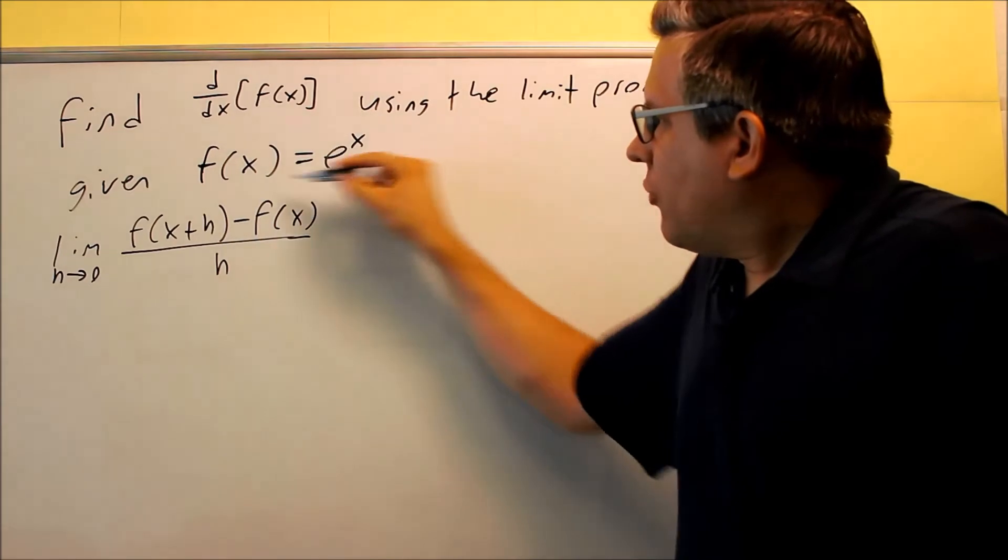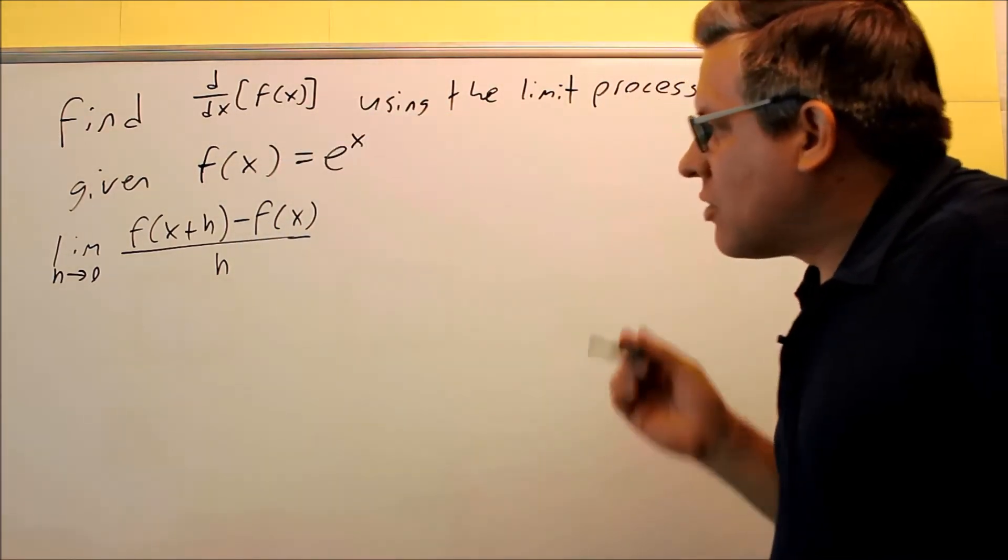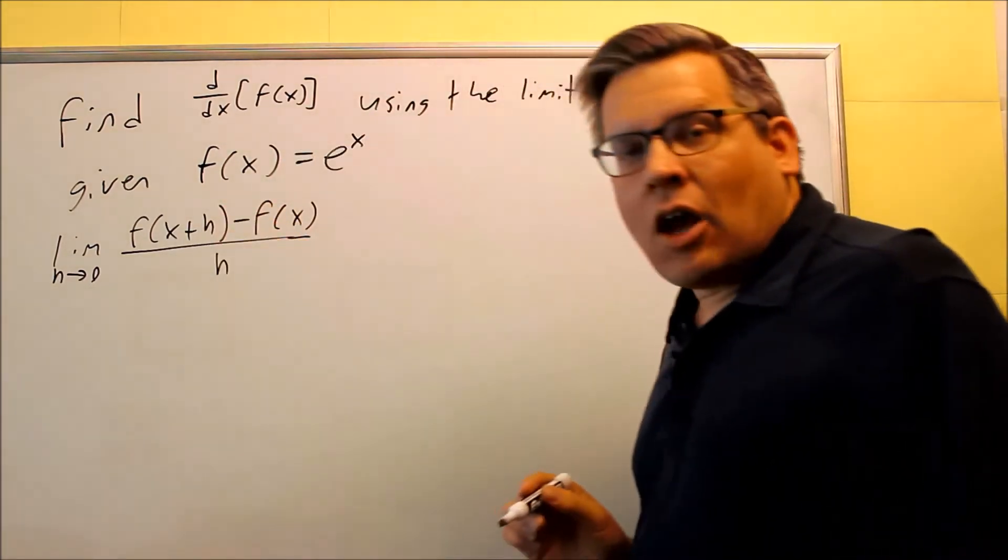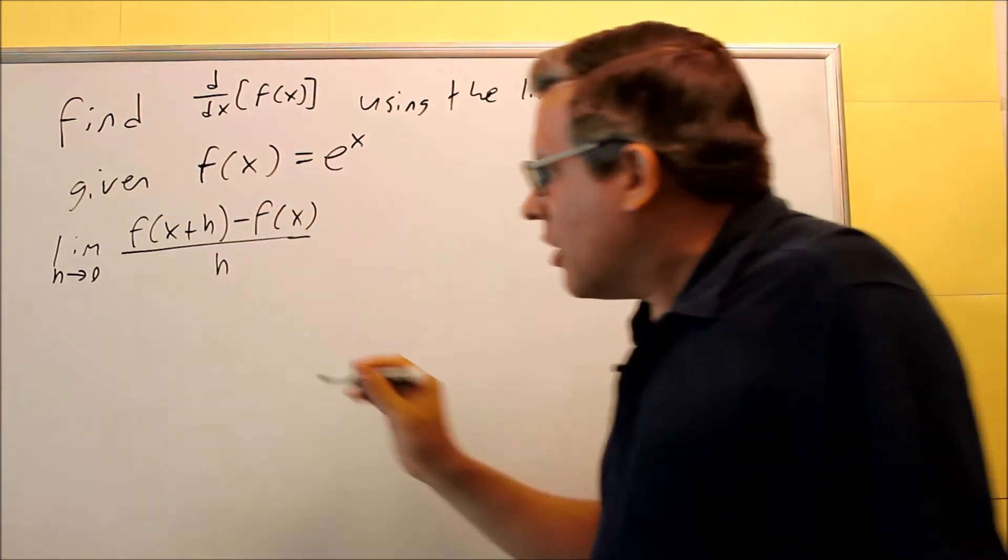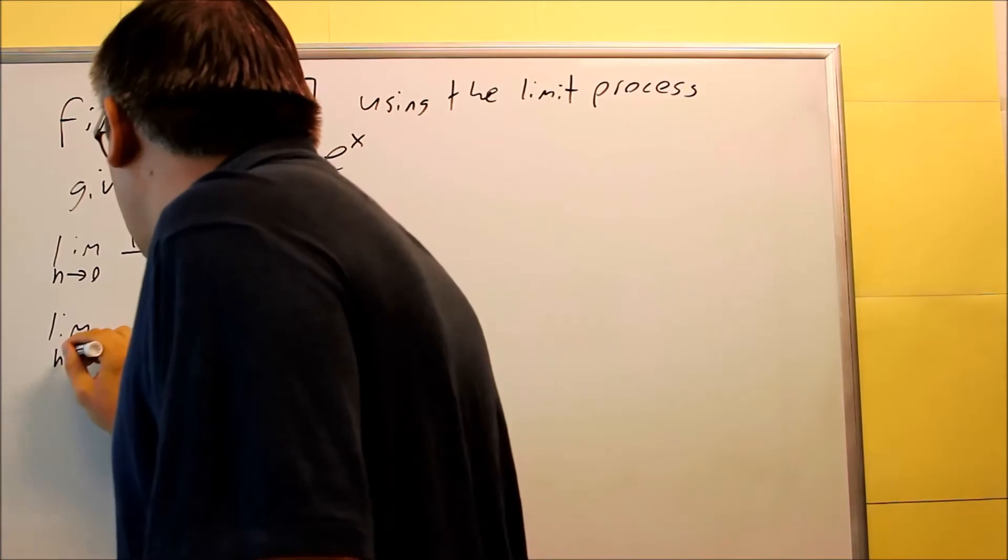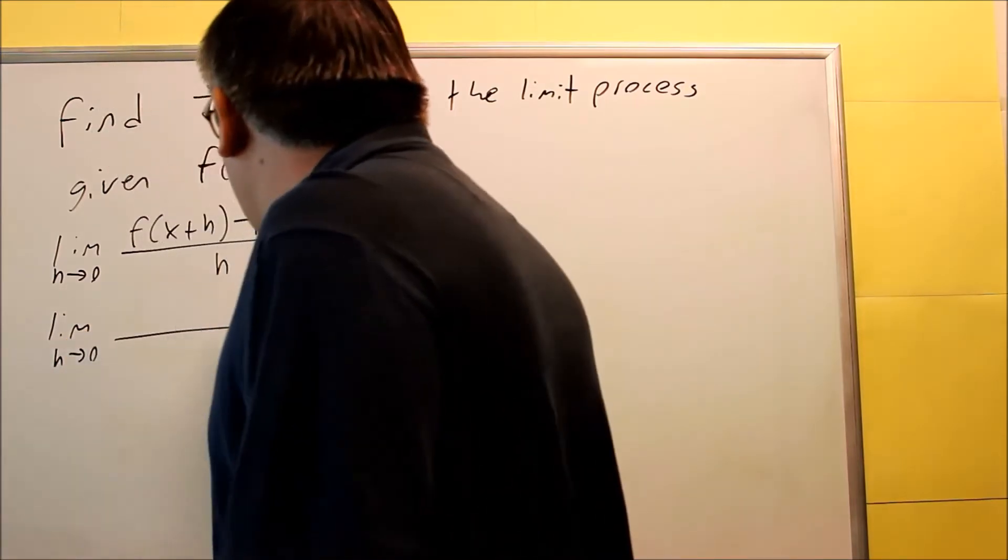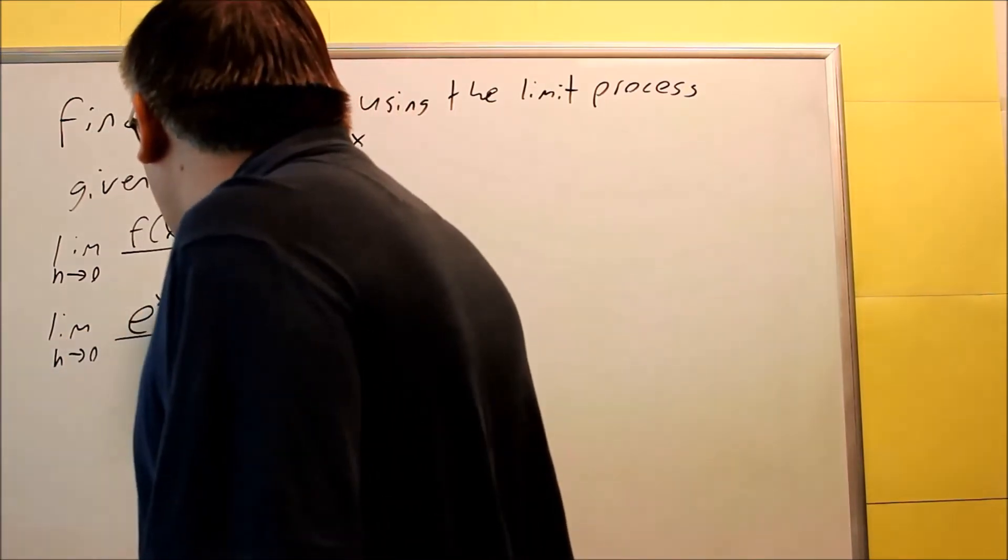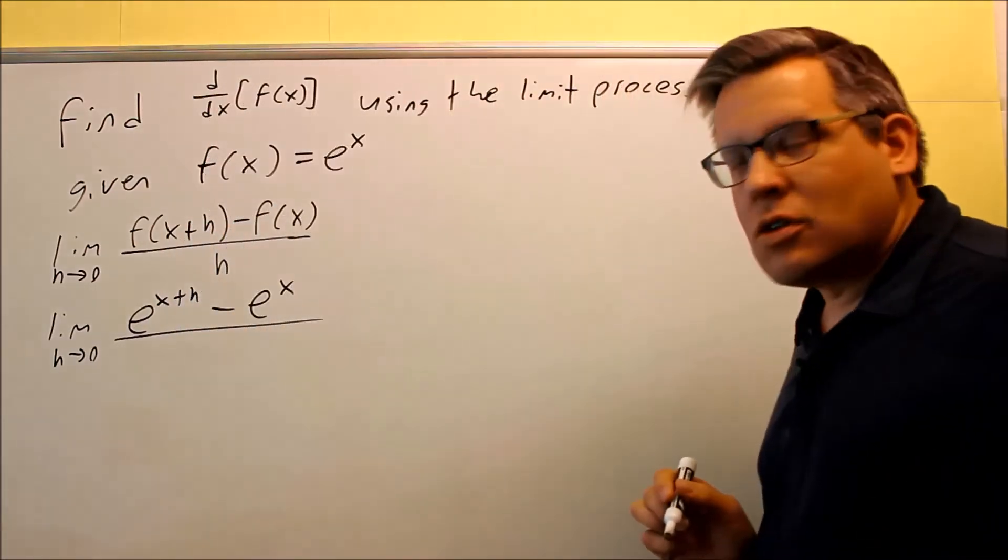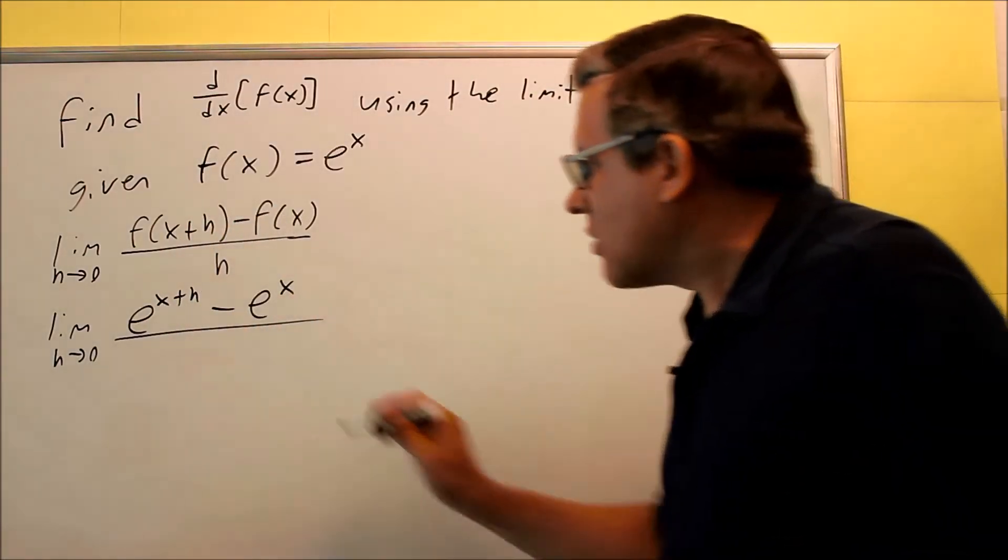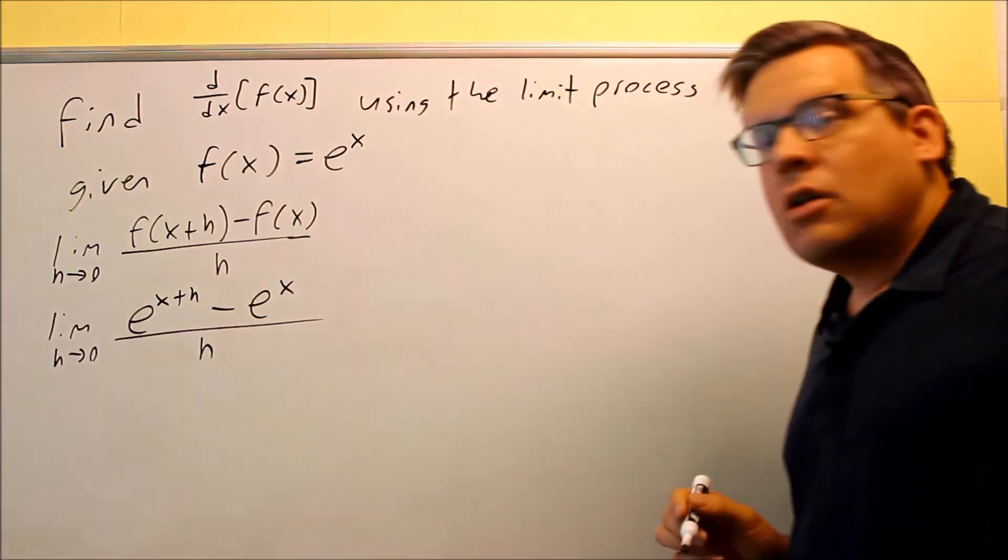So here's our function, f of x is e to the x. So we want to find f of x plus h, which means that you're going to put x plus h in place of the x there. So we're going to do limit as h goes to 0, and then you're going to do e to the x plus h minus f of x, which is our original function e to the x, and then that's going to be over h.